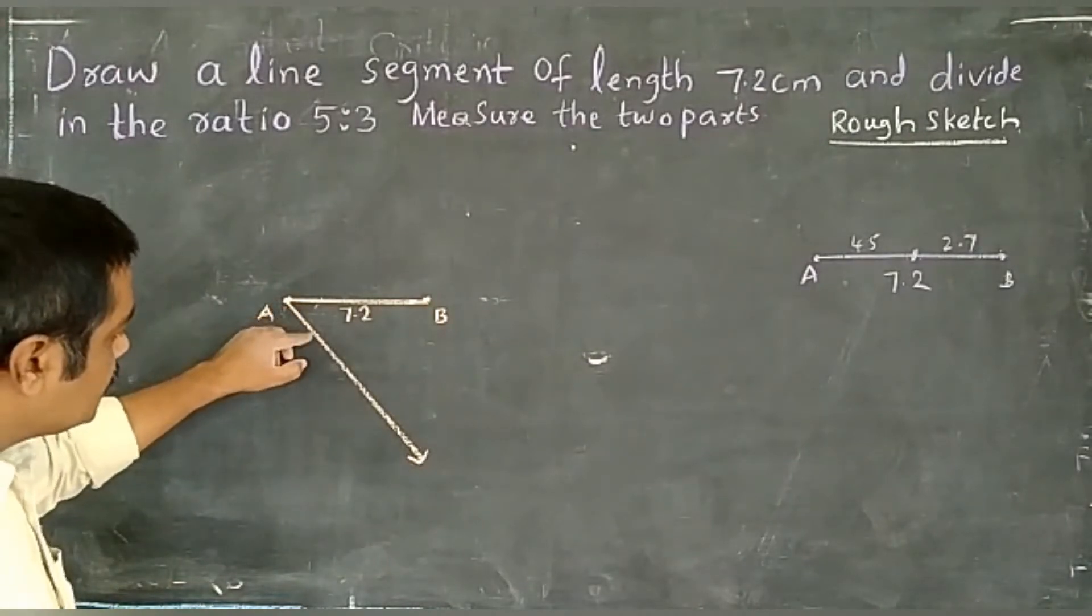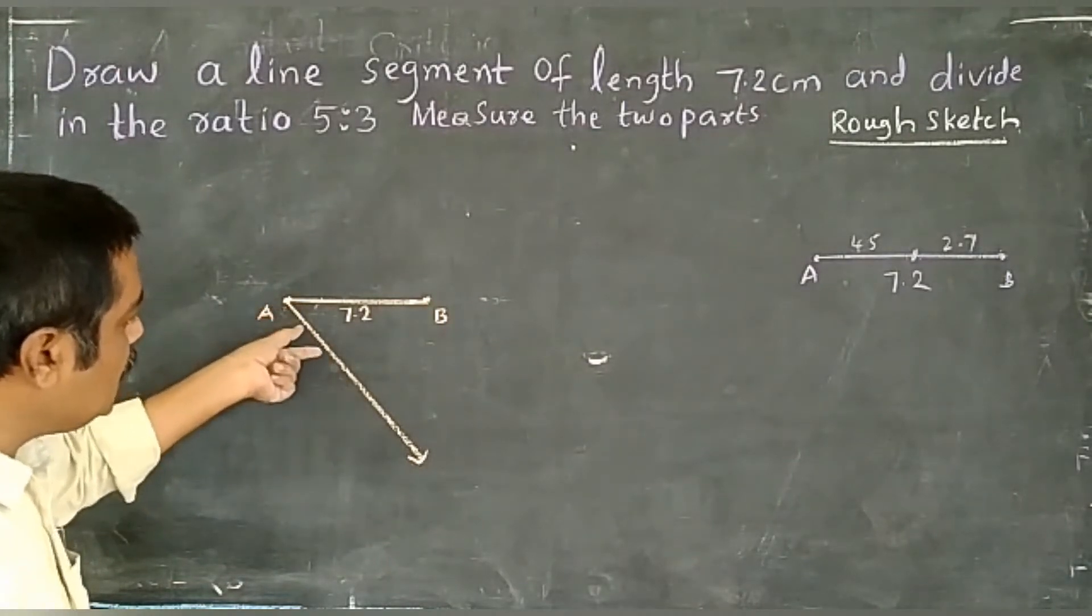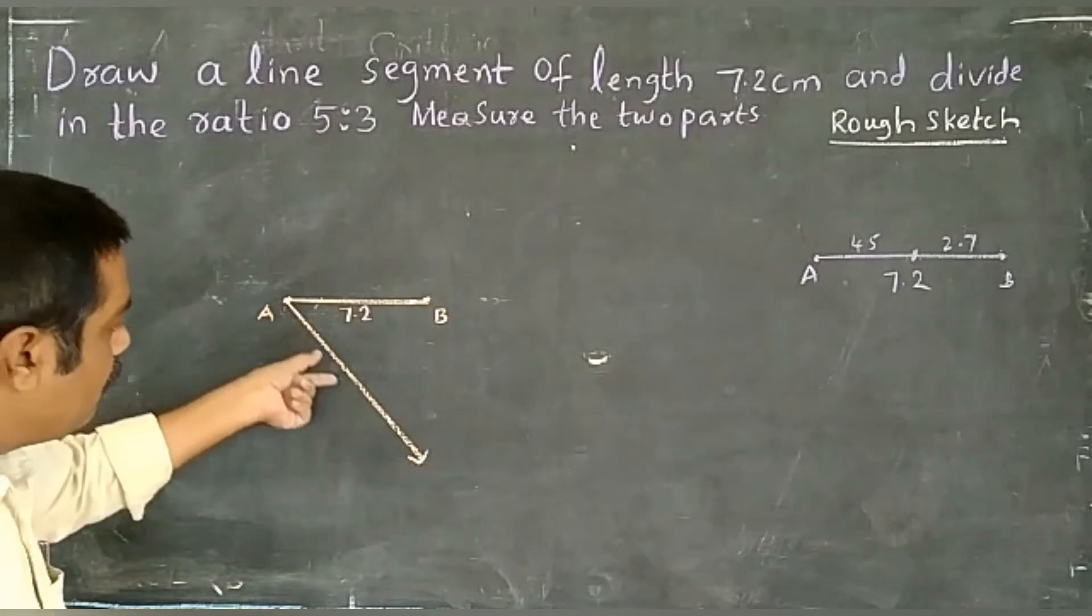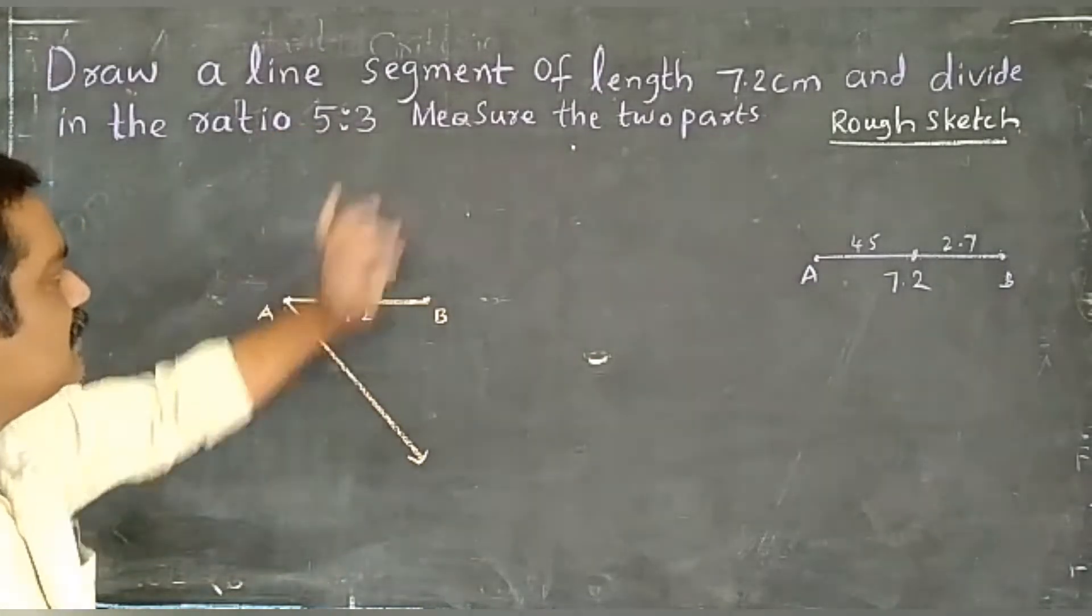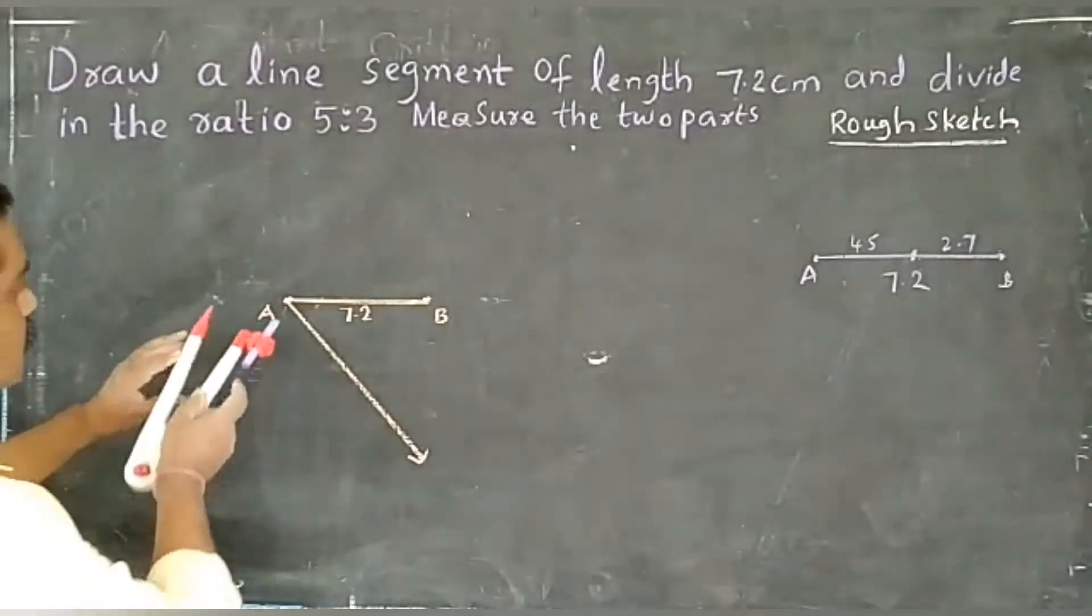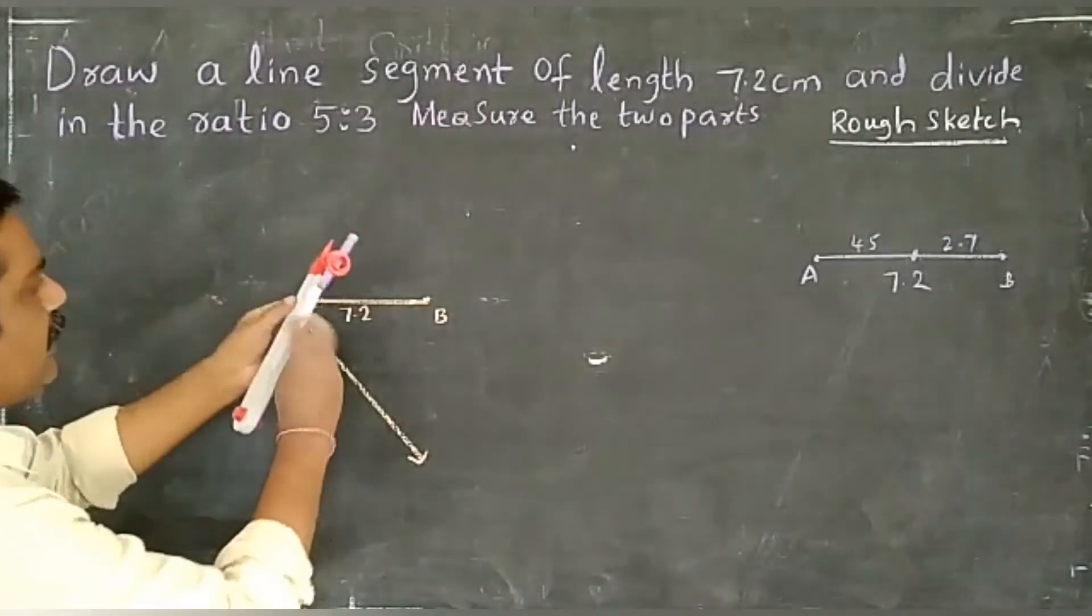Then mark points at equal intervals. How many points? 5 plus 3 equals 8 equal parts. I'm going to mark each one.